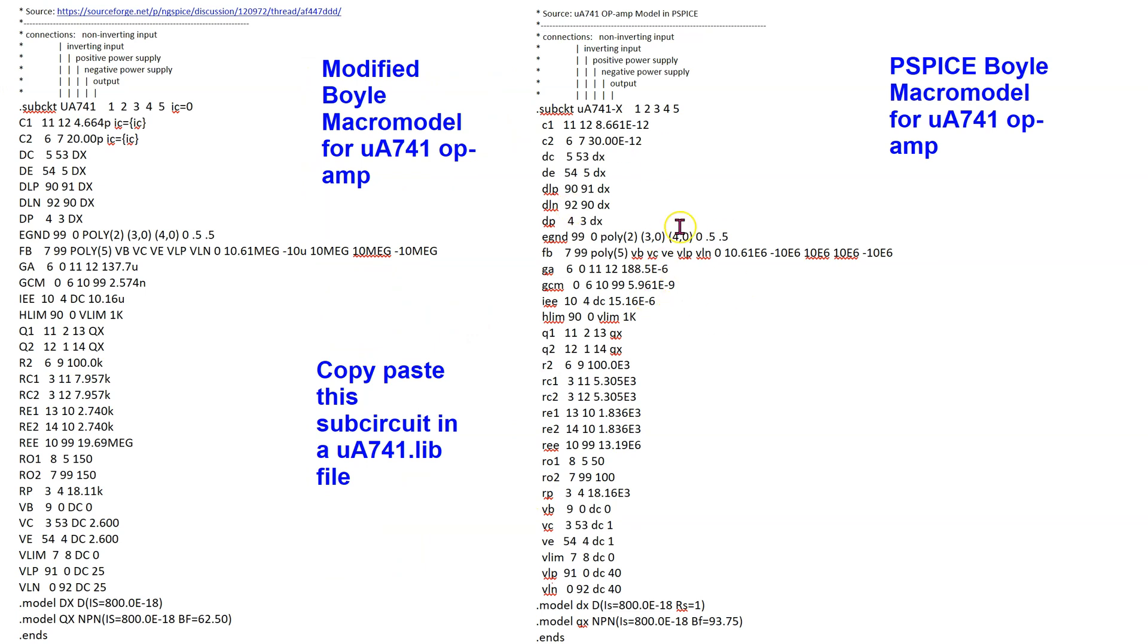This PySpice Boyle macro model is shown here on the right. The 741 op-amp is defined as a sub-circuit with five inputs. The complete netlist for the macro model is defined. On the left, we have a modified Boyle macro model for the 741 op-amp. Comparing the two macro models, there are some minor differences in some of the component values. The modified Boyle macro model is an updated version of the original PySpice Boyle macro model. And in this work, we will use the modified Boyle macro model. This model is actually obtained from the ng-spice discussion forum shown here. This complete sub-circuit definition is posted in the video description. It needs to be copy-pasted into a file named mua741.lib.